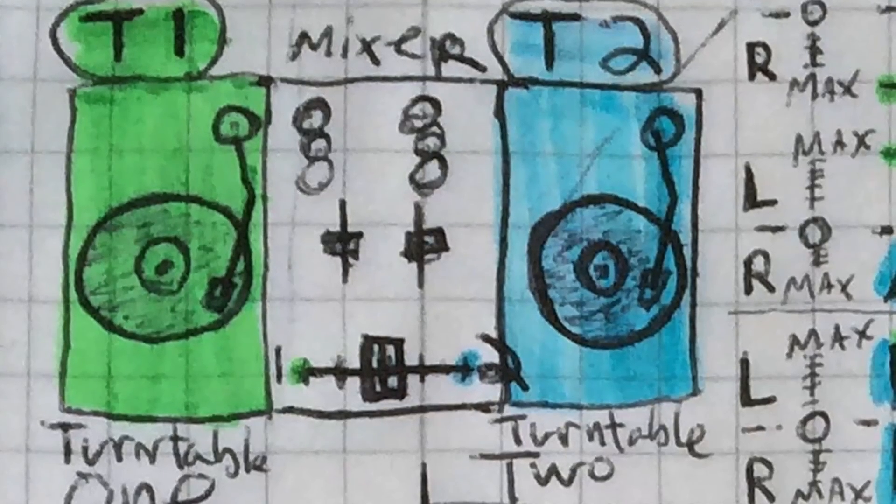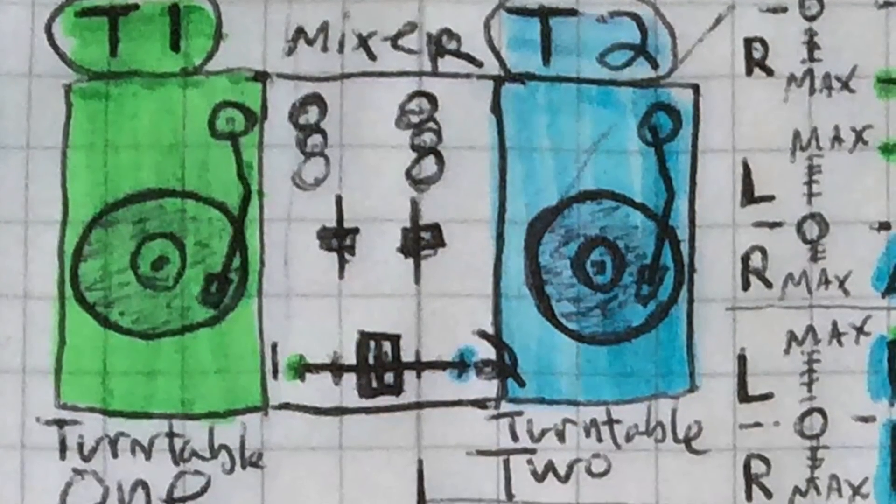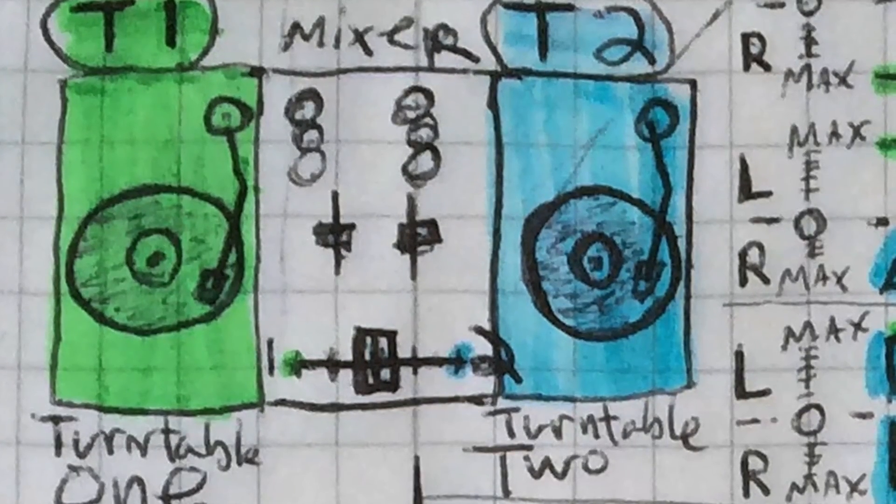In all of these examples, turntable 1 is colored in green and turntable 2 is colored in blue.